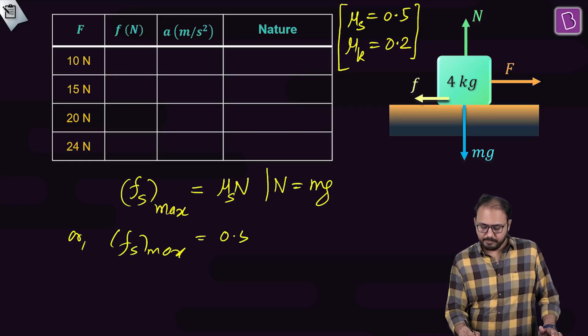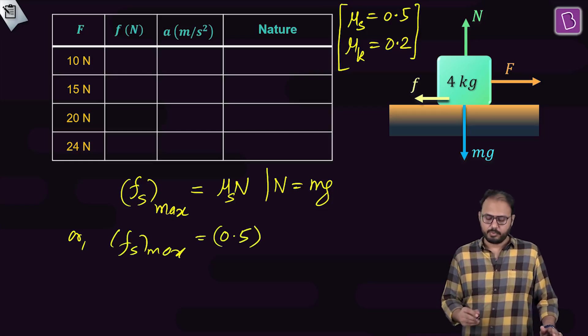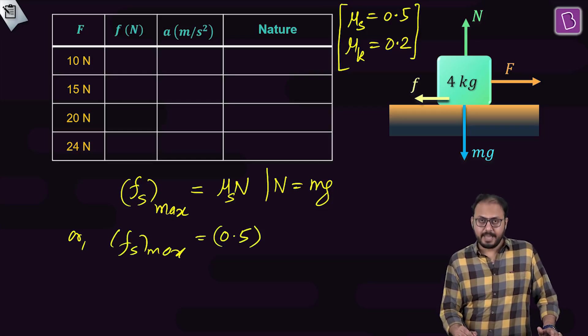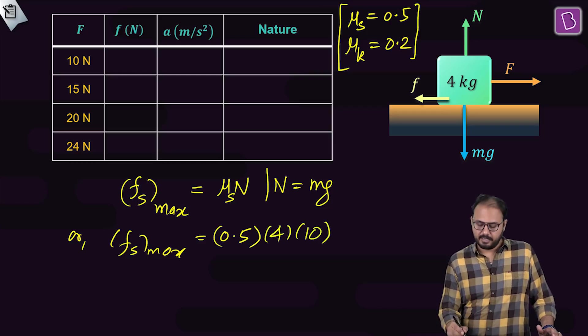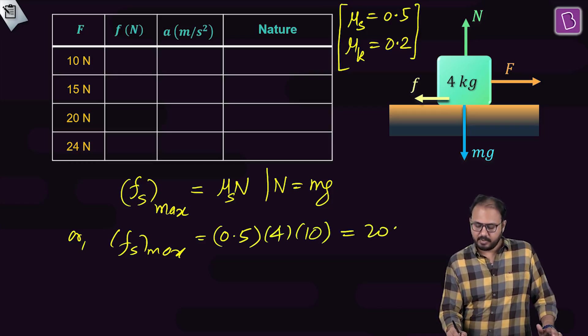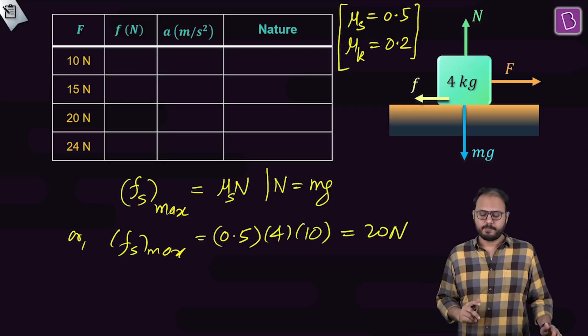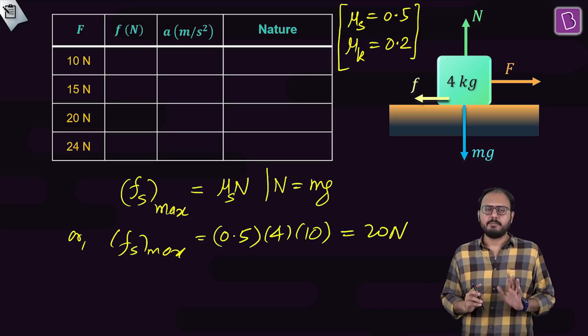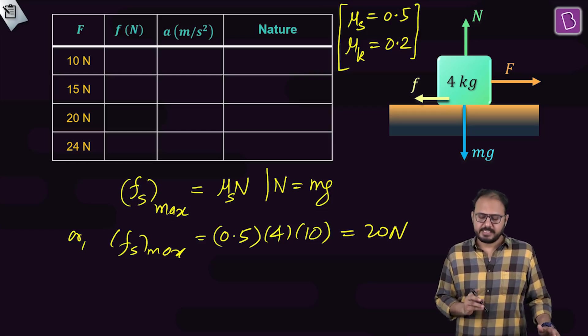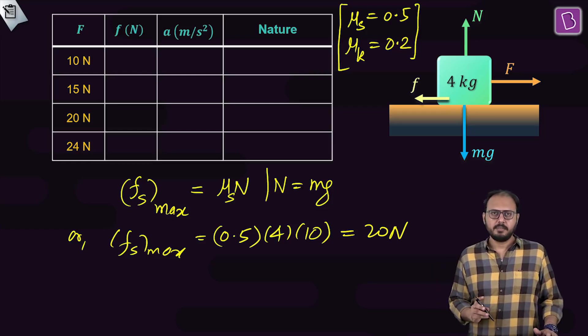Or, fs max is equal to μsN. Can you please tell me what is the value of μs? 0.5 given to you. What is the value of N? mg. What is m? 4. What is the value of g? 10. Do you agree that this is equal to 20 newton? Take your time. 20 newton is fs max.